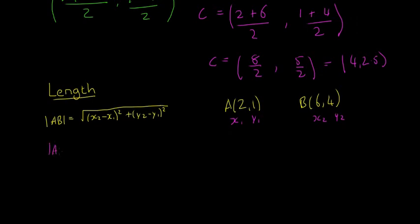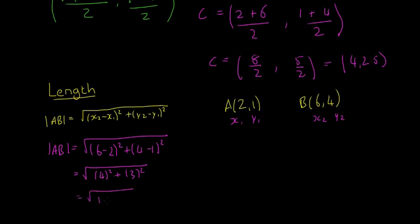The length of AB is going to be the big square root: so x₂, which is 6, minus x₁, which is 2, squared, plus y₂, which is 4, minus y₁, which is 1, squared. That's going to be the square root of 4² plus 3².